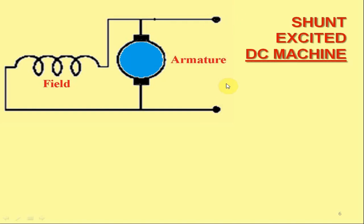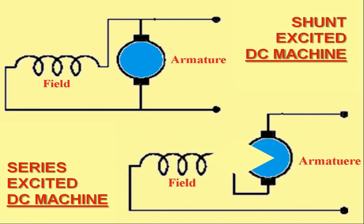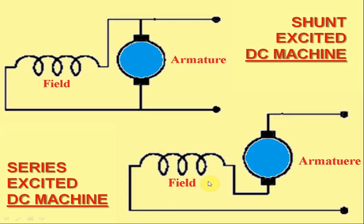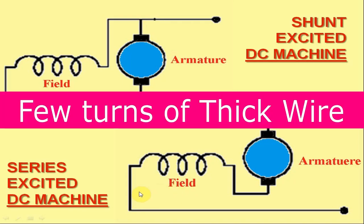In a series excited DC machine, as represented on your screen, you may easily notice that the field winding is connected in series to the armature winding. Therefore, in a series excited DC machine, the field winding and armature carry the same current. That is why, unlike separately excited and shunt excited DC machines, a low resistance in the series field winding would be a requisite. For this reason, the field winding of a series excited DC machine comprises only a few turns of thick wire.